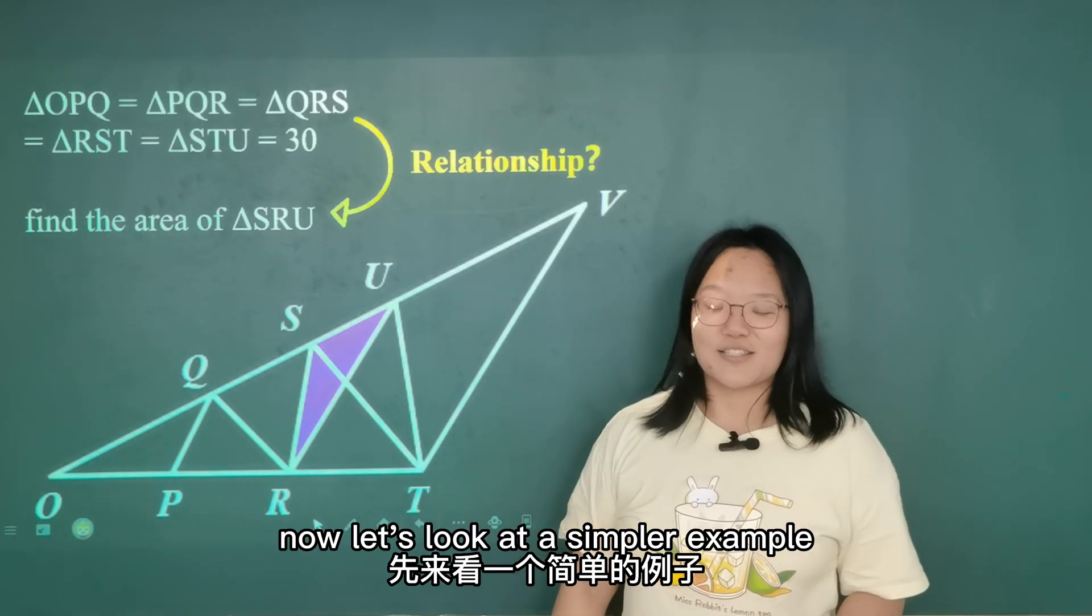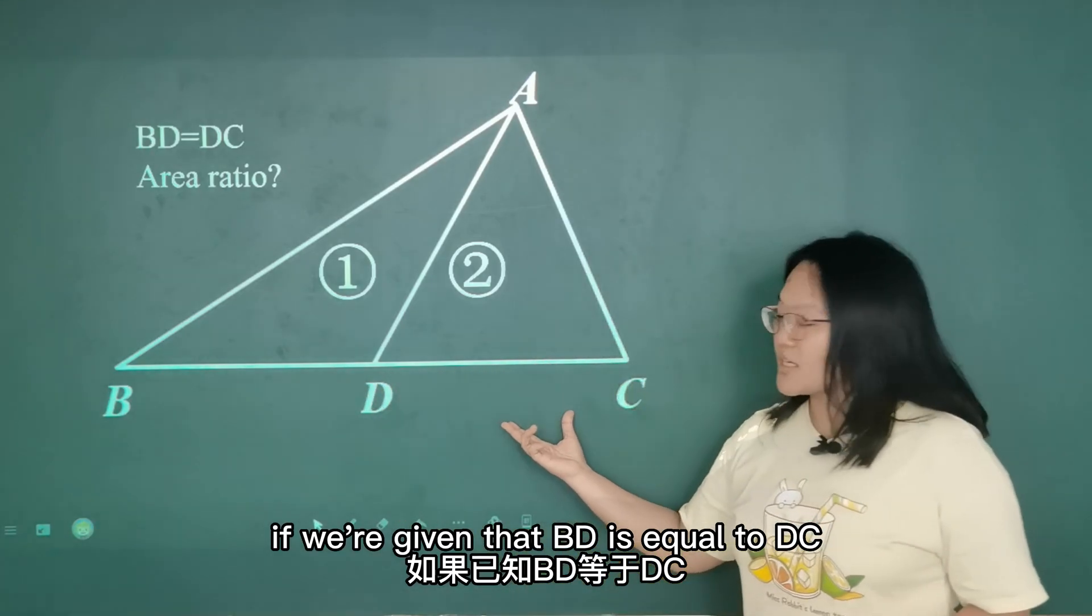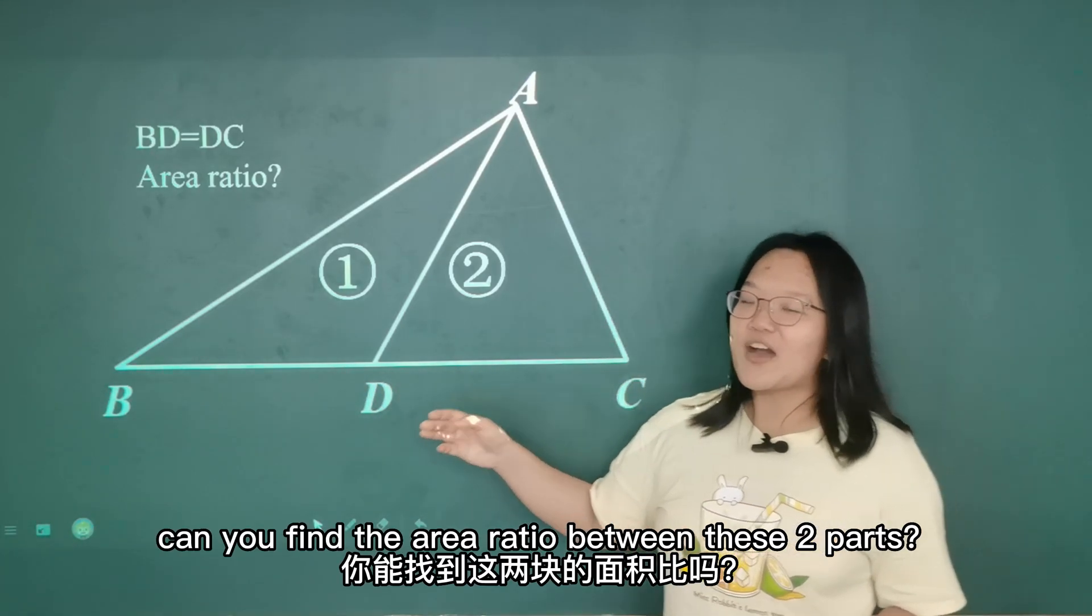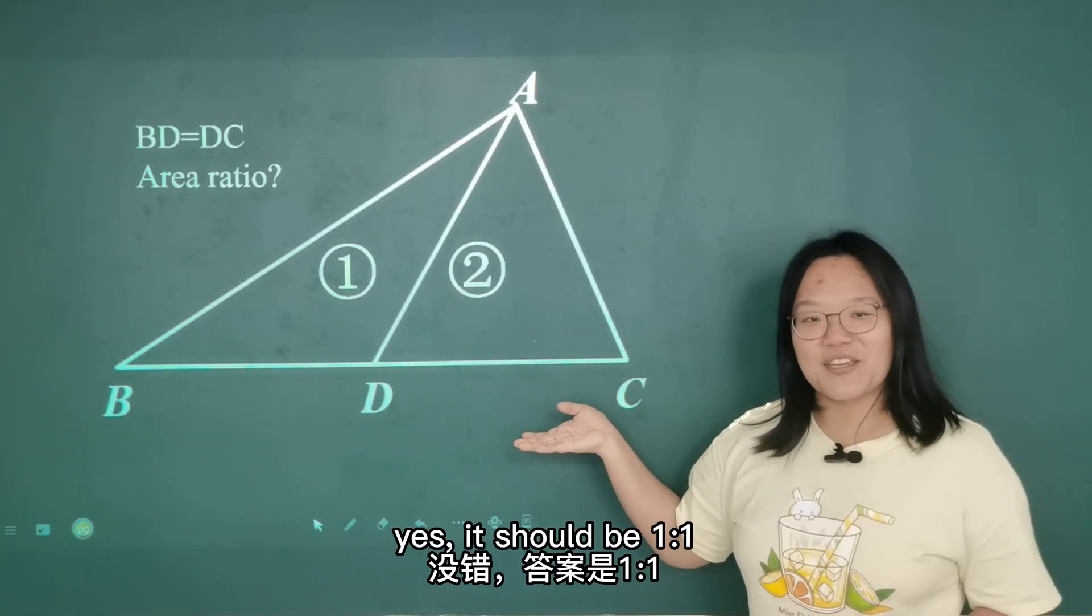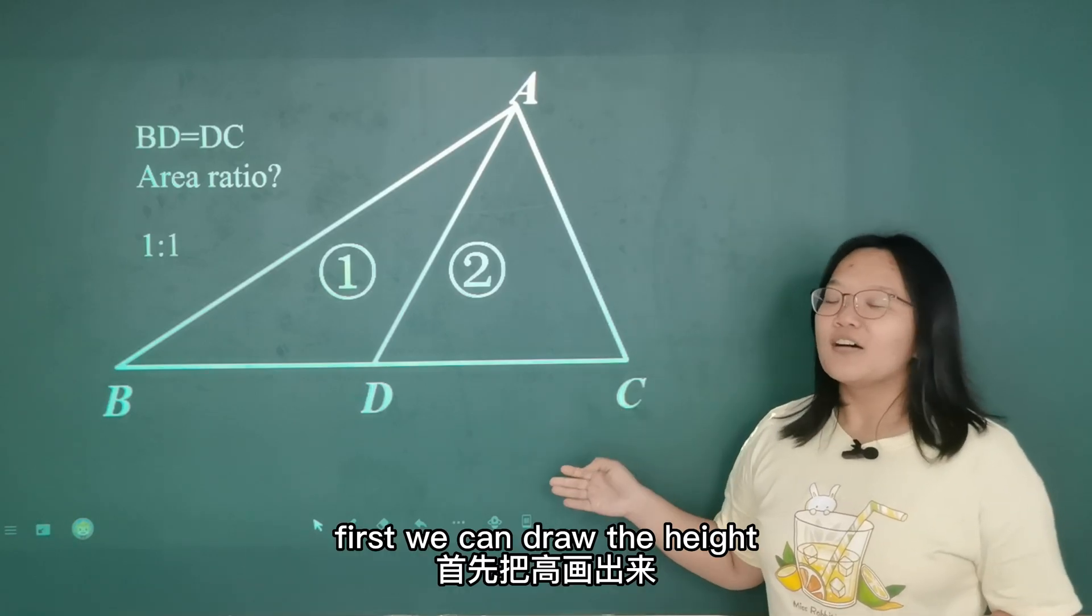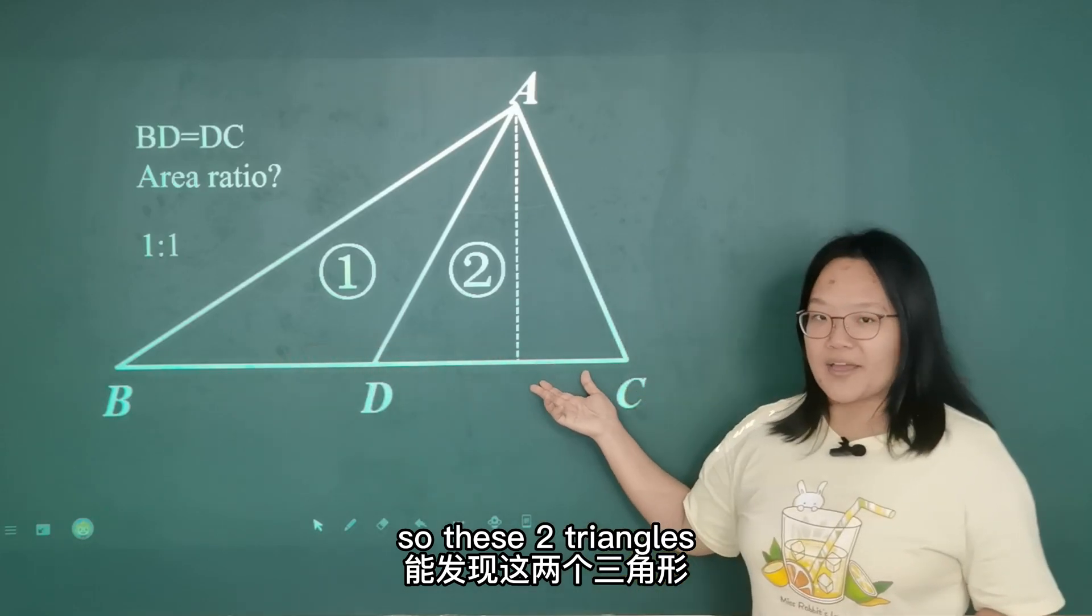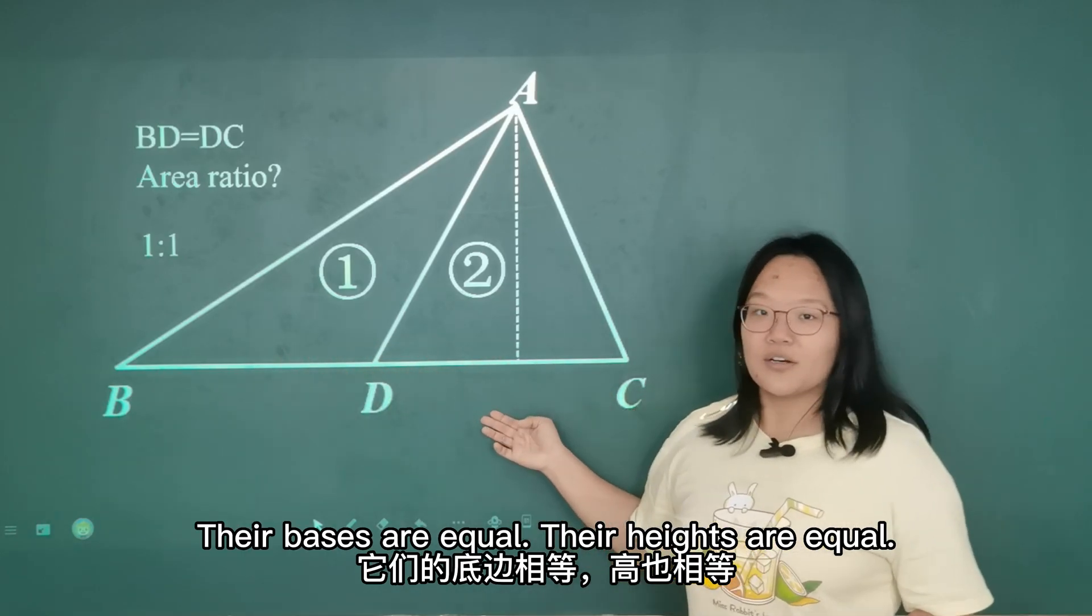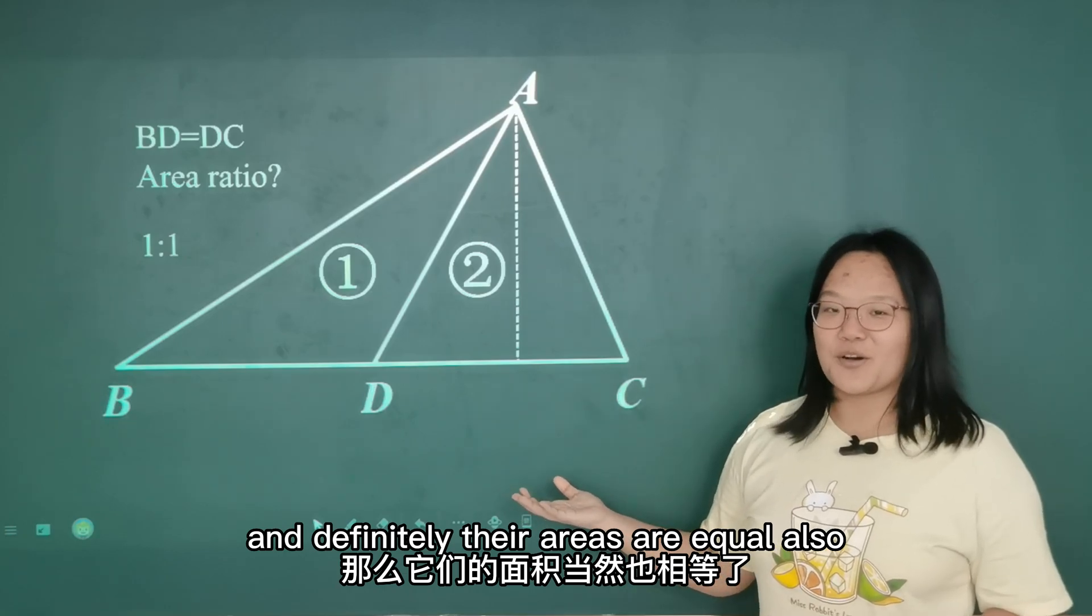Now let's look at a simpler example. If we are given that BD is equal to DC, can you find the area ratio between these two parts? Yes, there should be 1 to 1. Brilliant. Let's check. First we can draw the height. So these two triangles, their bases are equal, their heights are equal, and definitely their areas are equal also.